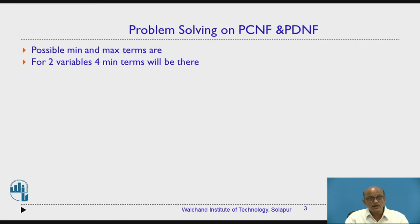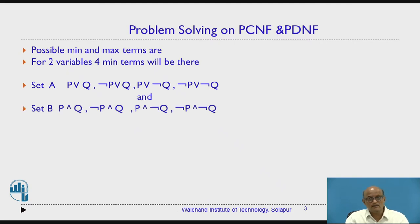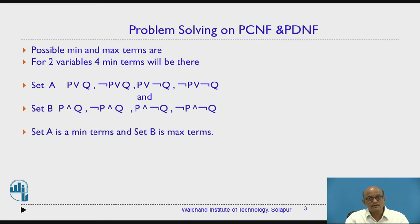As we know, there are possible minterms and maxterms. For two variables there are four. Set A contains maxterms and set B contains minterms.